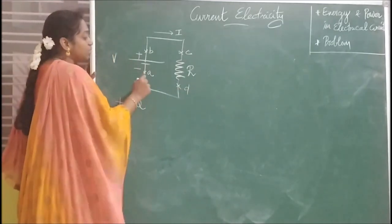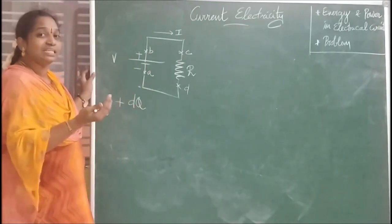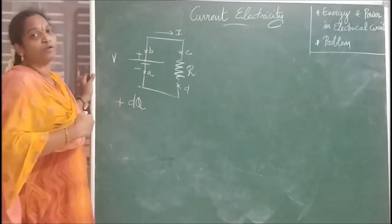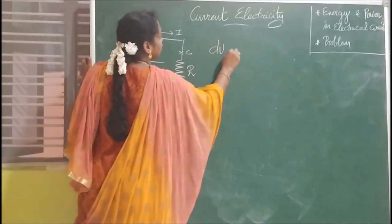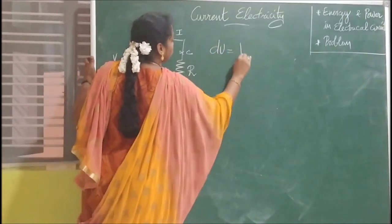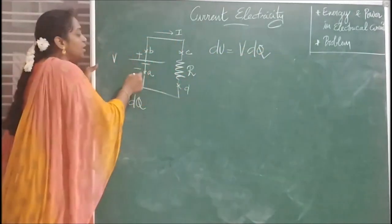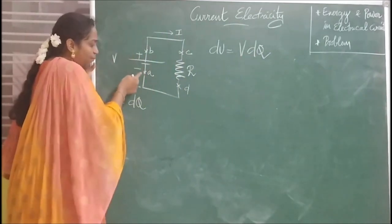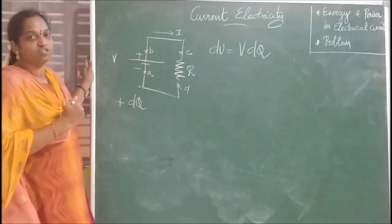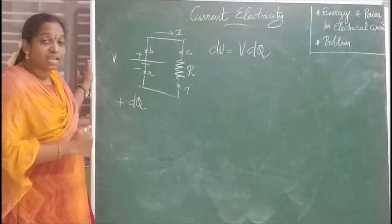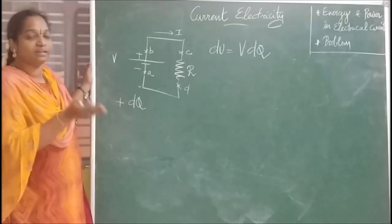When the charge is passing from point A to B, what is happening is it gains potential energy. We are going to write this equation. Potential energy dU is given by the equation dU = V·dQ. So here, when the charge passes from point A to B, it gains potential energy.